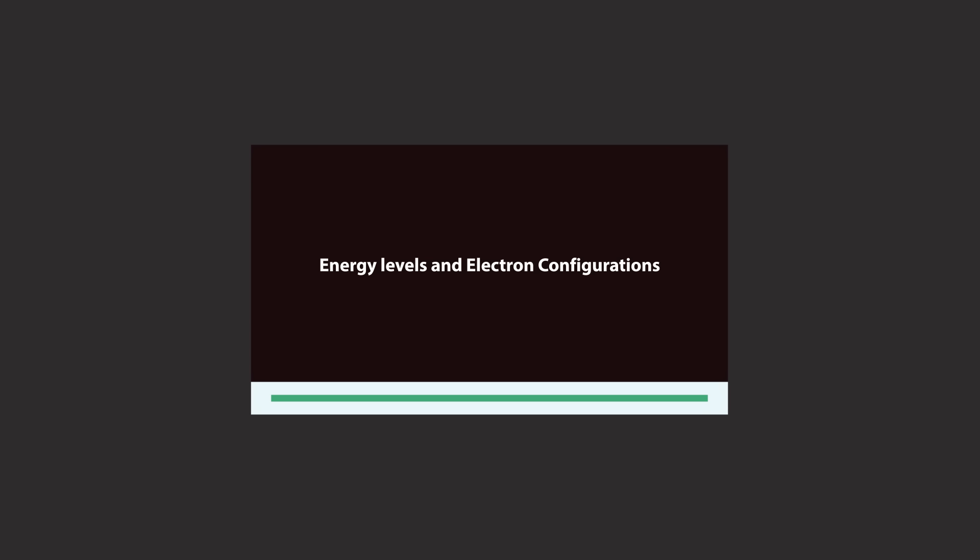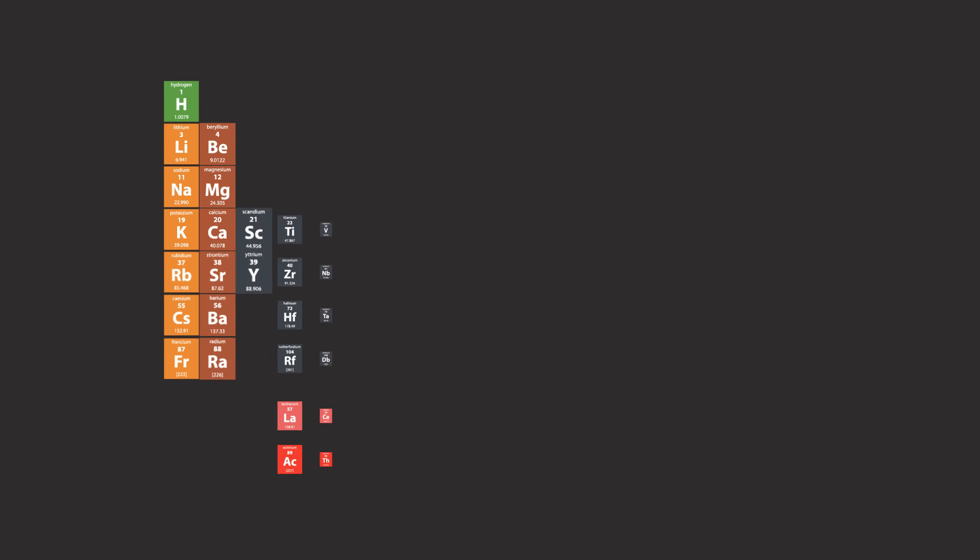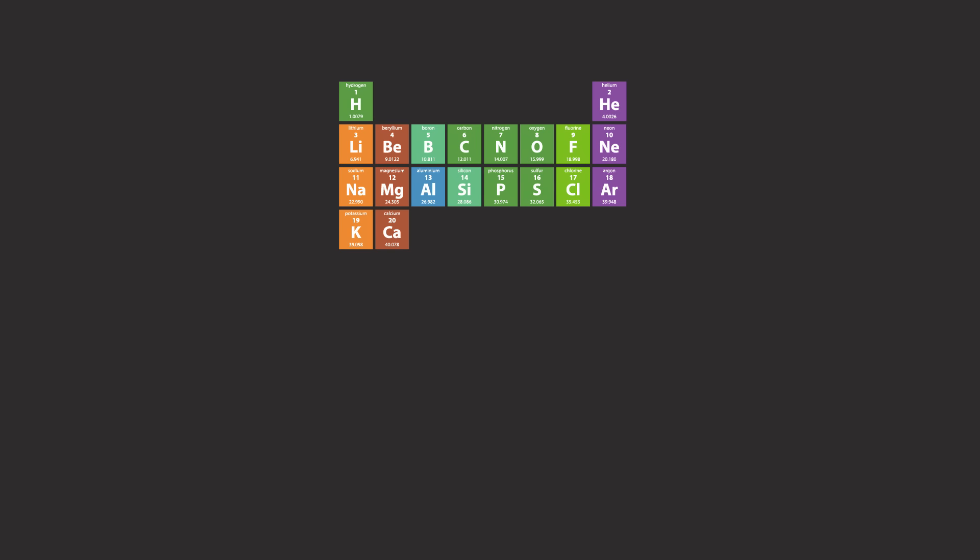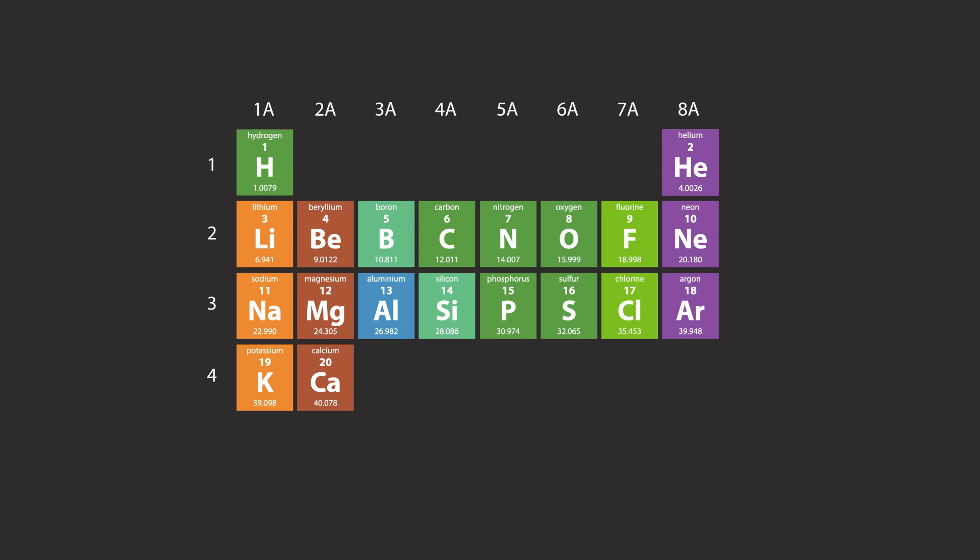In a previous lesson, we learned about electron shells and electron configurations. In this lesson, we shall learn about electron configurations of the first 20 elements, and how this relates directly to the group and period numbers in the periodic table.